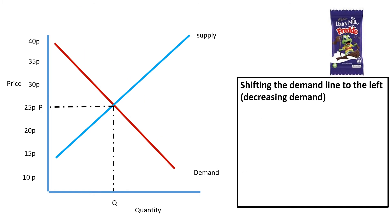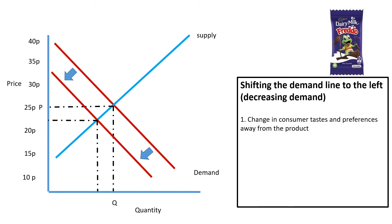Now we're considering shifting the demand curve to the left — what decreases demand? Shifting it left results in a lower price and lower quantity. Factor one: a change in consumer tastes and preferences away from the product. We've seen a shift to the left of the demand line for public transport. Conversely, a shift to the right because of COVID is for garden furniture — we all demanded more because we've been staying at home. A shift to the left is if we don't want it anymore, like DVDs.